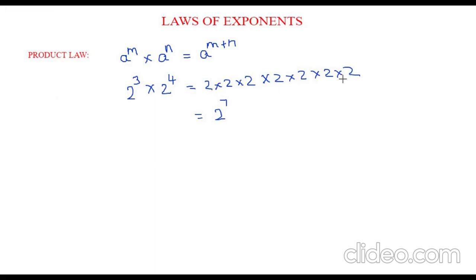Instead of writing such a big thing, we use this first law. We can directly write 2 cube times 2 to the power of 4 as 2 to the power of 3 plus 4. Directly we will add up the power, so it will be written as 2 to the power of 7. Isn't it very easy?